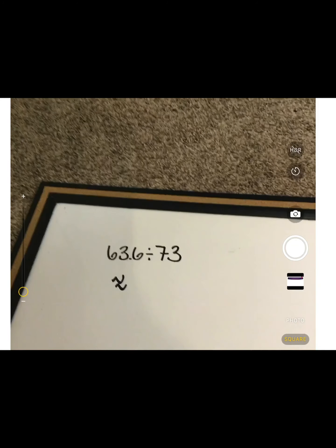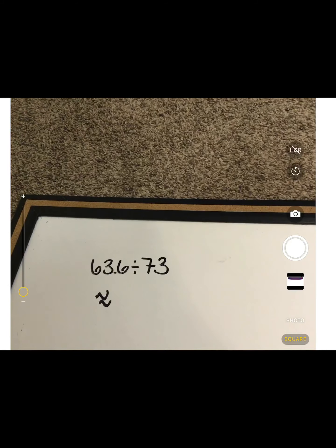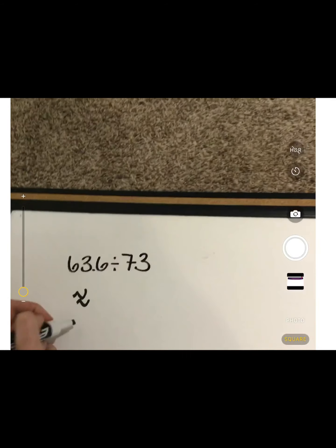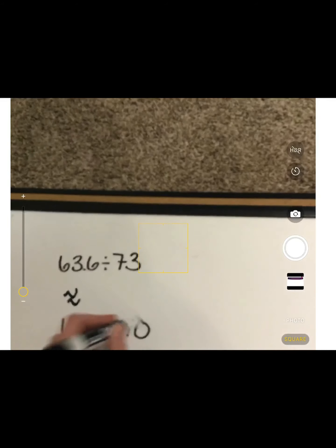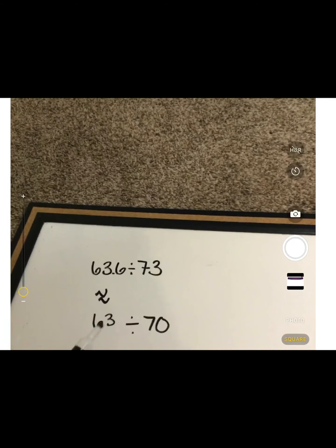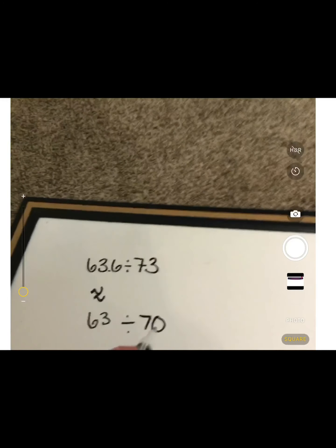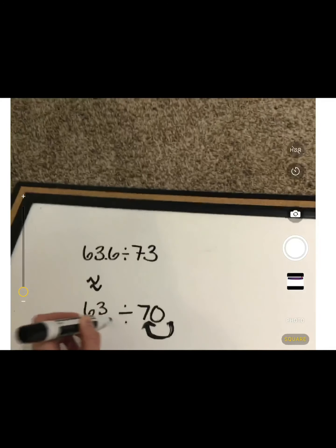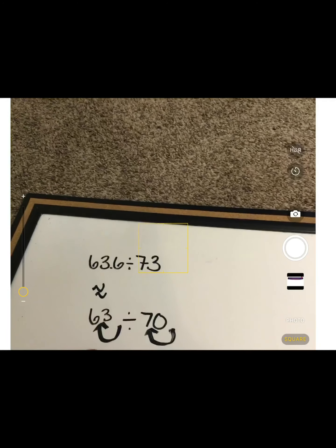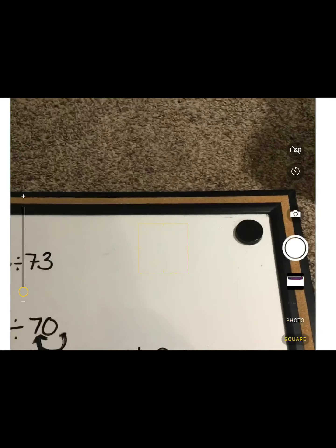So how would we do this one? One way I could look at this is I could say 63 and 6 tenths — I could round this to 63 and divide it by 70. Those are easier numbers for me to work with. If I wanted to shift my decimal to make it even smaller, then it would be 6.3 divided by 7. So 6.3 divided by 7 — that's the same as 63 tenths.